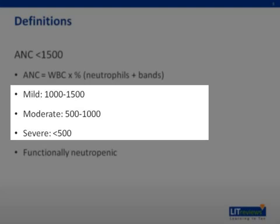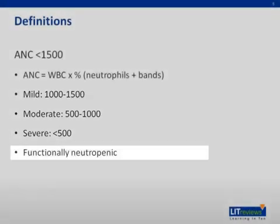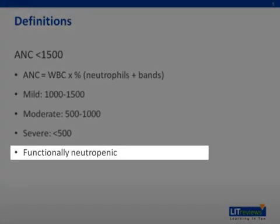However, more important than the actual number of cells is the body's ability to fight infection. After all, this number only mentions the number of neutrophils in the blood, but does not take into account the number of neutrophils in the bone marrow, reticular endothelial system, tissues, et cetera. What matters is whether someone is functionally neutropenic, that is, more susceptible to infections.